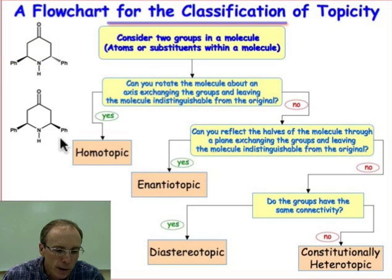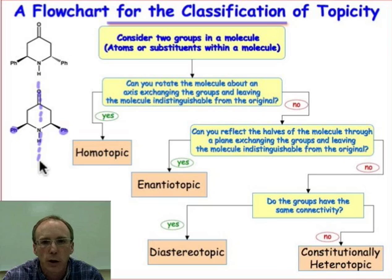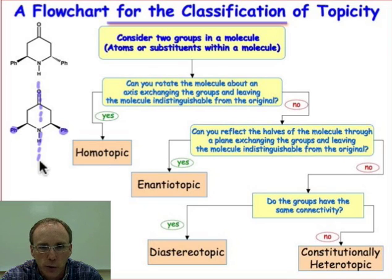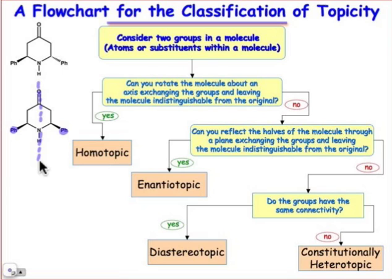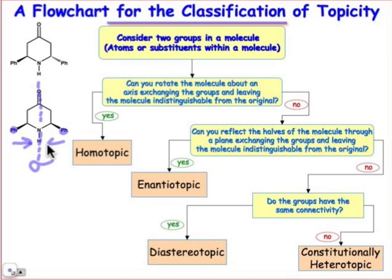Those phenyl groups are homotopic. How about these? I no longer have an axis of rotation because those two phenyl groups are both above the plane of the screen — if I were to rotate, they would both be below the plane of the screen, so they don't exchange with one another upon rotation. However, if I reflect the left half through the right half through this mirror plane sigma, those phenyl groups are exchanged. The left phenyl group goes to the right, and the molecule after reflection is exactly the same as before. So there is no rotation, but there is a reflection — those groups are enantiotopic.